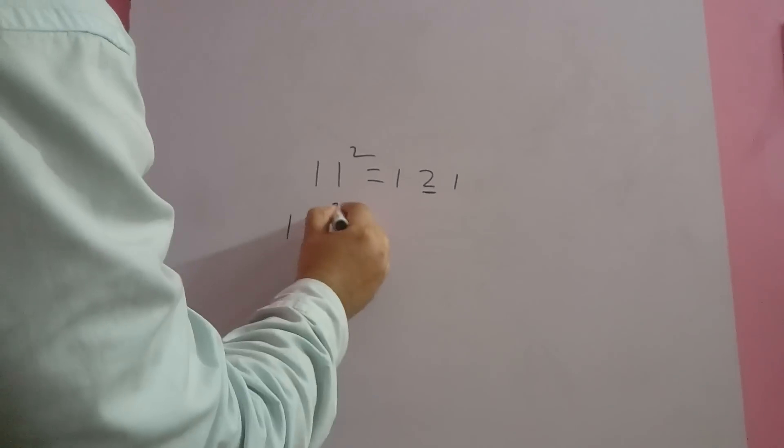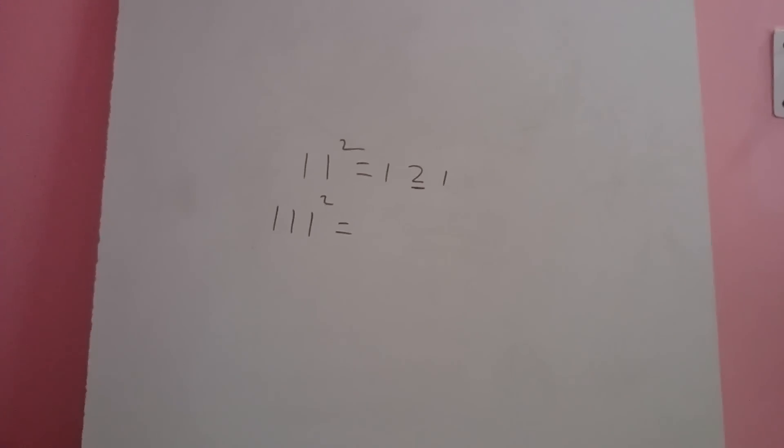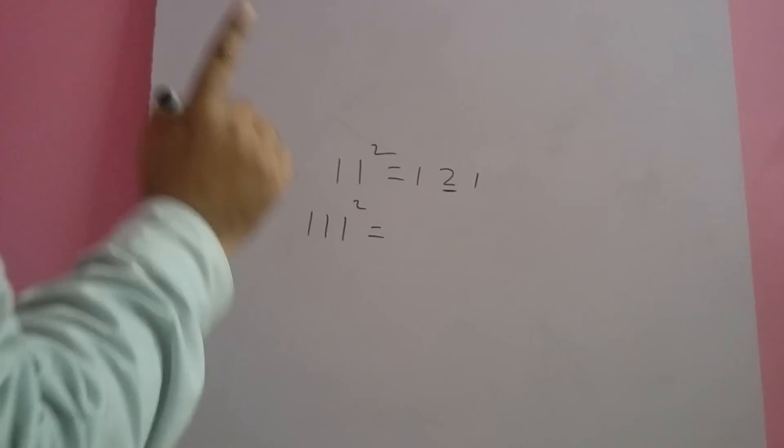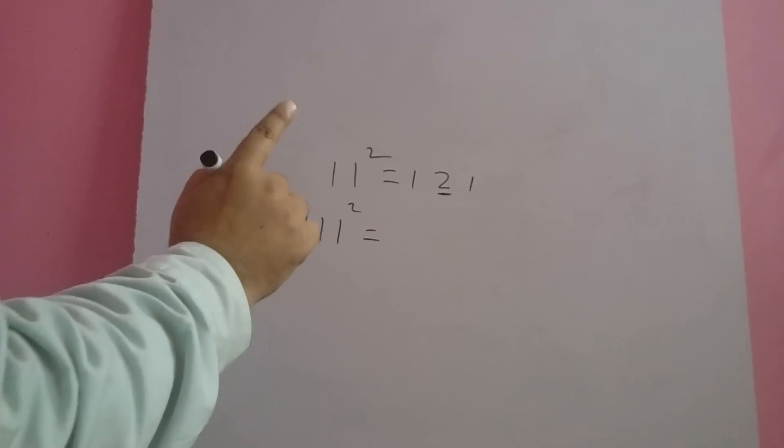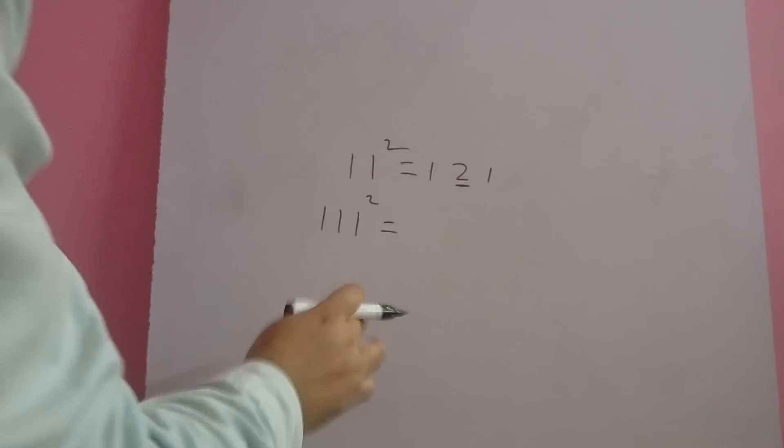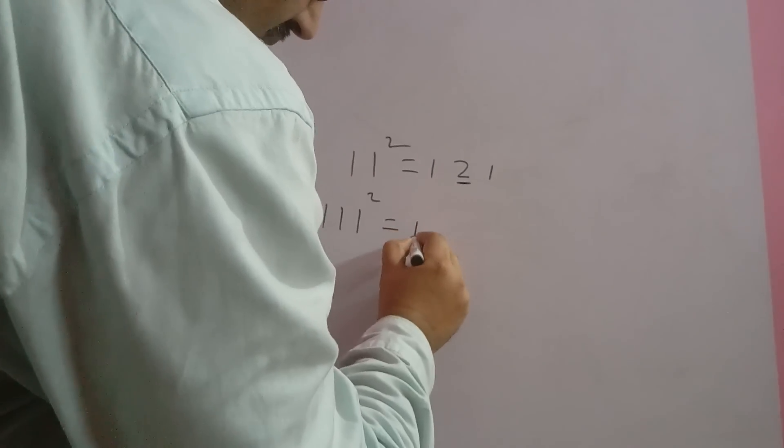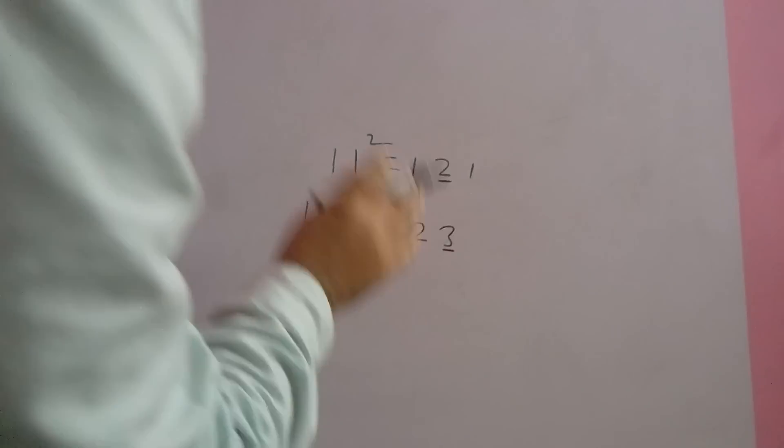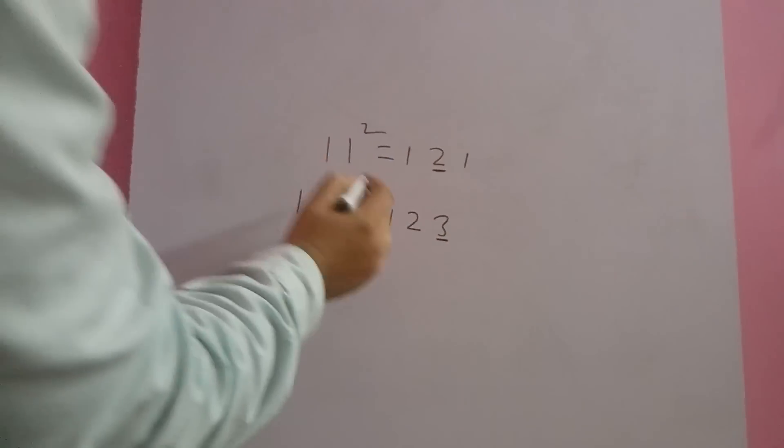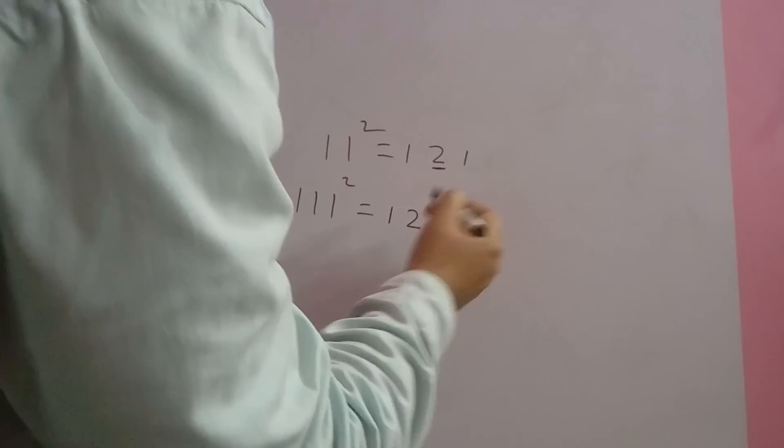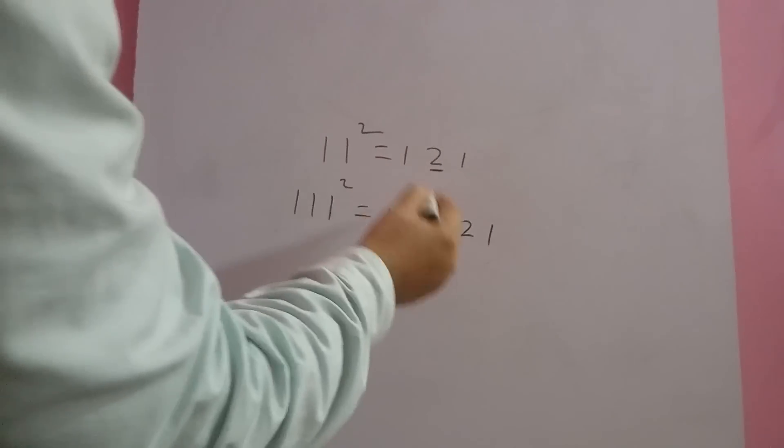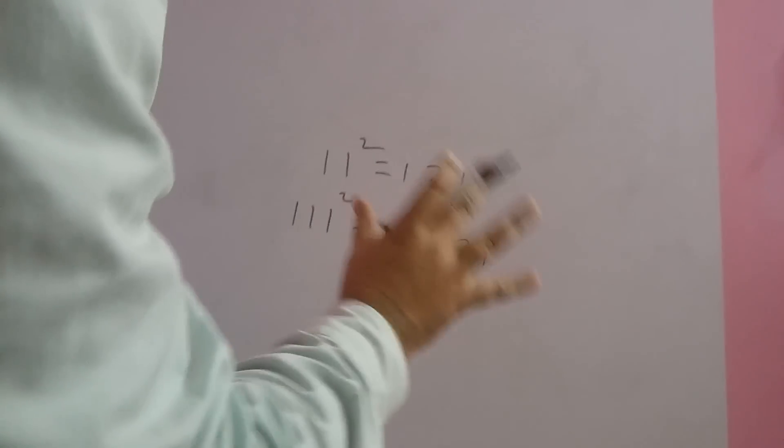Similarly, 111 square. We count number of ones. Number of ones is 3, so the maximum number for this question is 3. We start from 1, 2, 3. We have to go to that maximum number: 1, 2, 3, and back up to 1: 1, 2, 3, 2, 1. This is the answer.